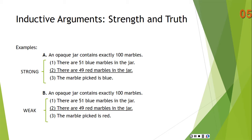Now the second argument has the same premises — 51 blue marbles, 49 red marbles — but a different conclusion: the marble picked is red. This is weak because the probability that the conclusion is true given the truth of the premises is less than 50-50.